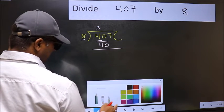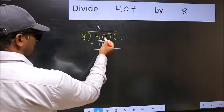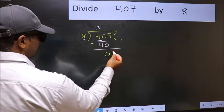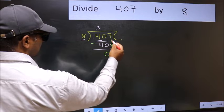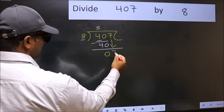Now you should subtract. 40 minus 40, 0. After this, bring down the beside number. So, 7 down.